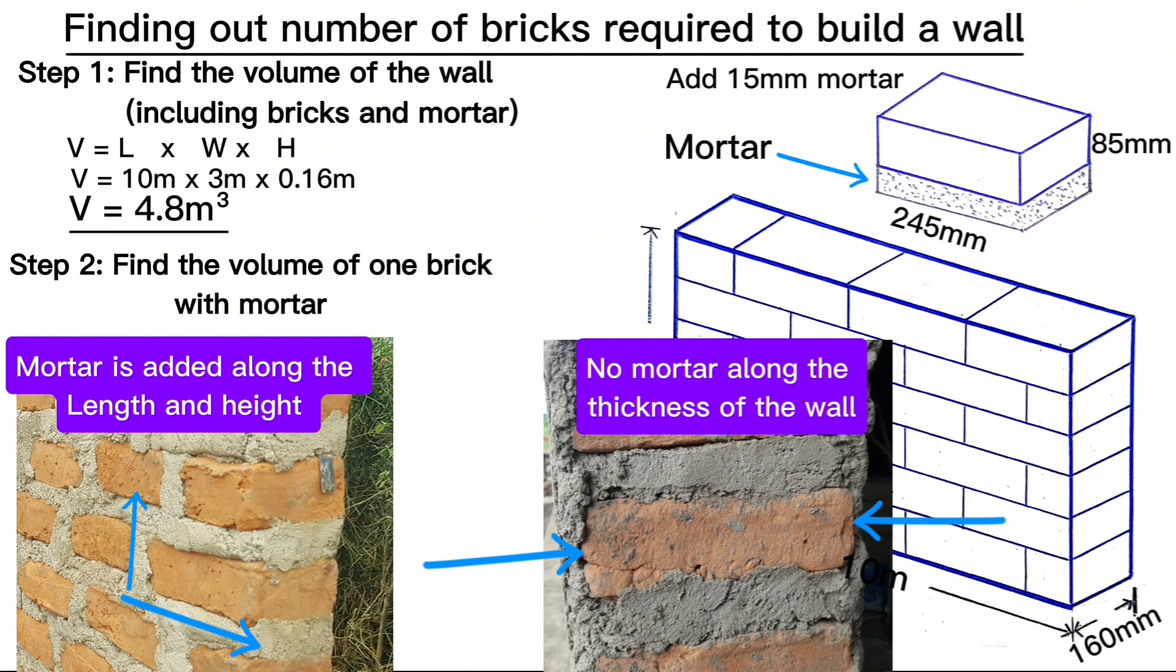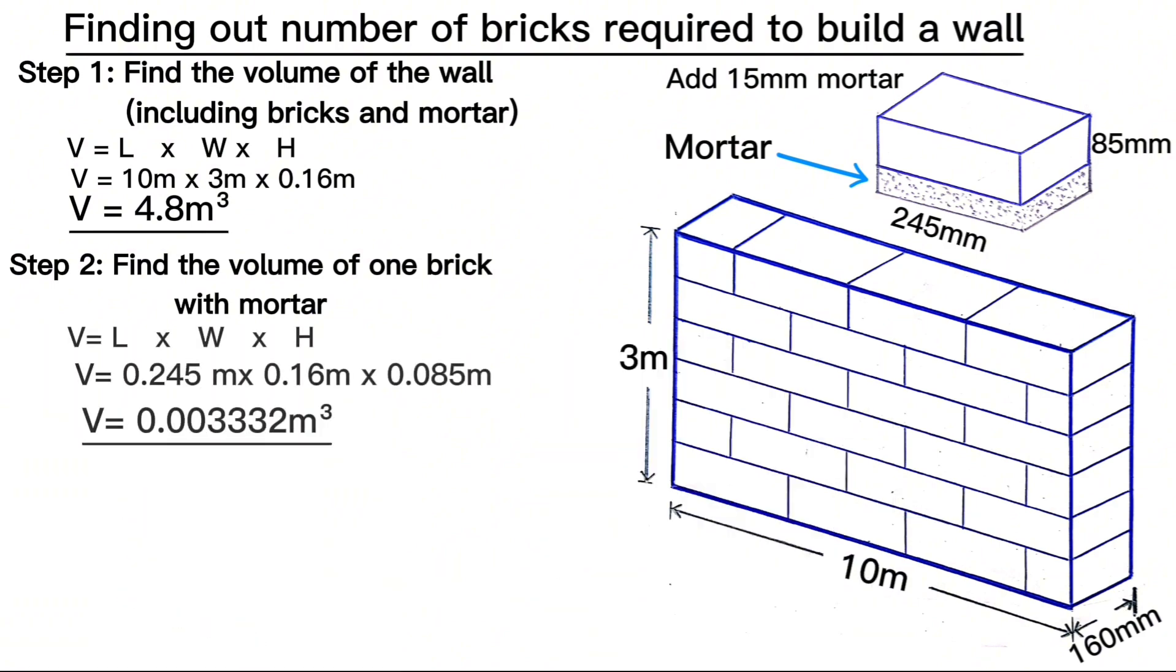There is no mortar that is added along the width or thickness of the brick. Therefore the length increases, the height increases, but the width or thickness of the wall does not increase. Therefore the volume of one brick with mortar comes to this figure here.